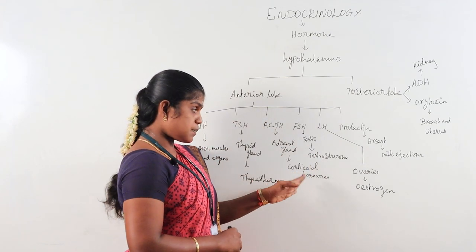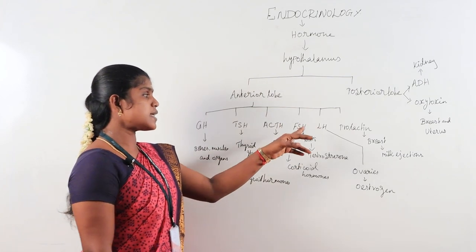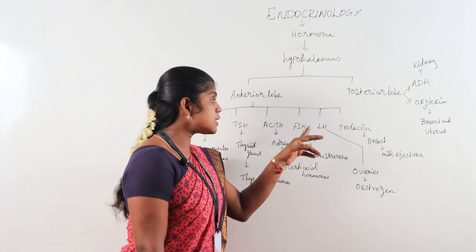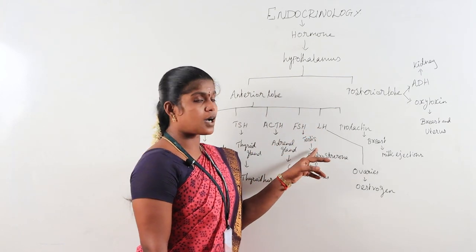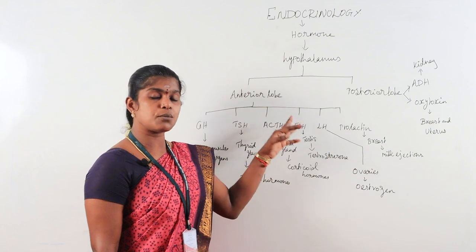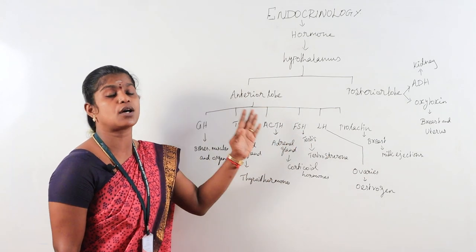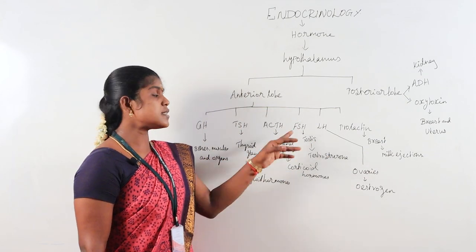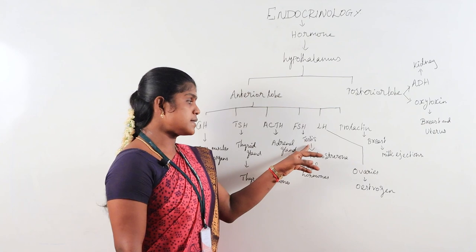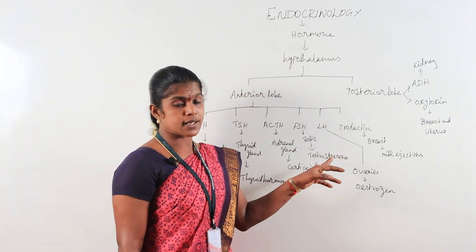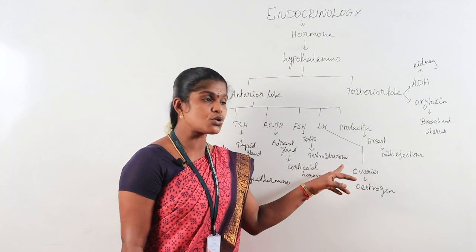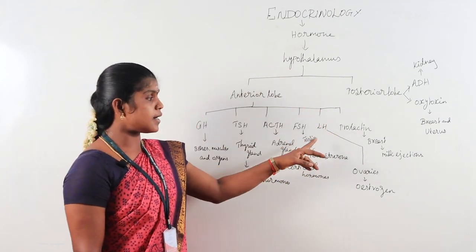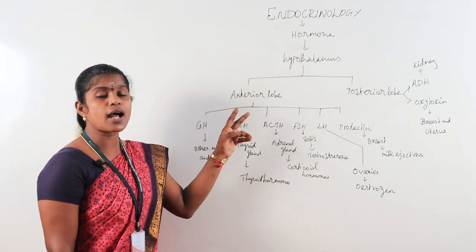FSH is the follicle stimulating hormone, which acts on the reproductive system — both testes and ovaries. It is specific for testes and is associated with secretion of testosterone.